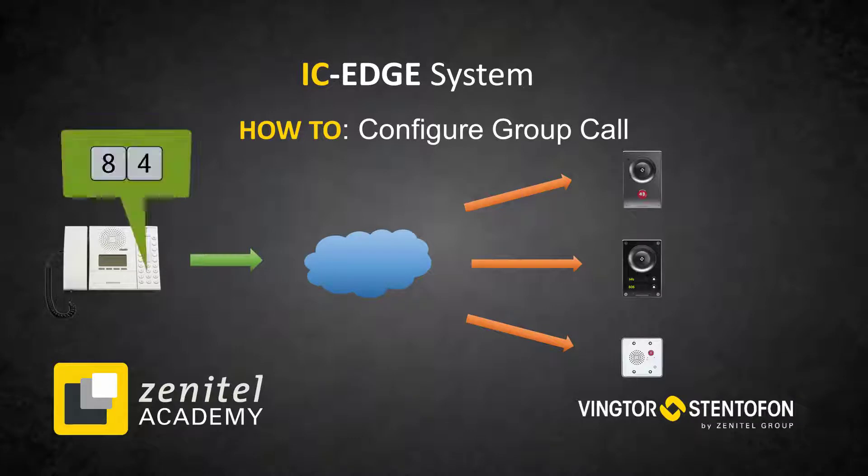A group call is activated by dialing the appropriate number. Press the M key to speak, and the C key to disconnect.